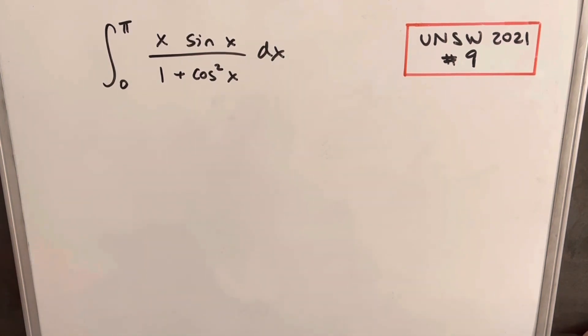Hey, we have here an interesting problem from the UNSW 2021 integration B problem number 9. We have an integral from 0 to π, x sine x over 1 plus cosine squared x dx.